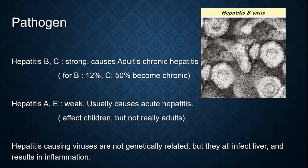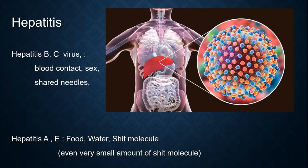Hepatitis-causing viruses are not genetically related, but they all infect the liver and result in inflammation. Hepatitis B and C viruses transmit through blood contact, sex, and shared needles, whereas hepatitis A and E are transmitted through food, water, and fecal matter — even a very small amount of fecal matter can cause infection.